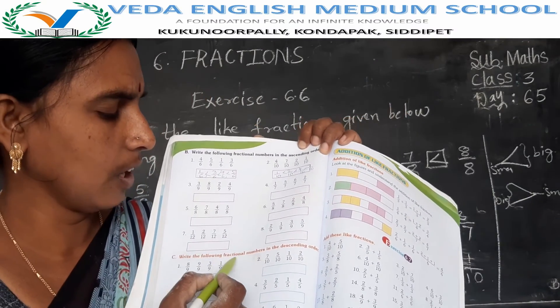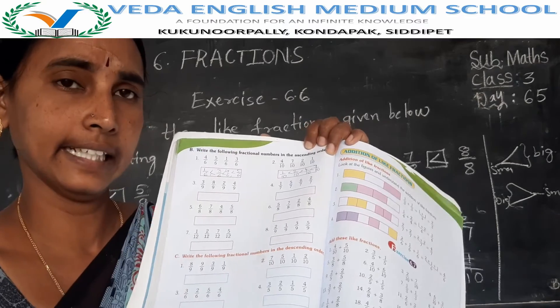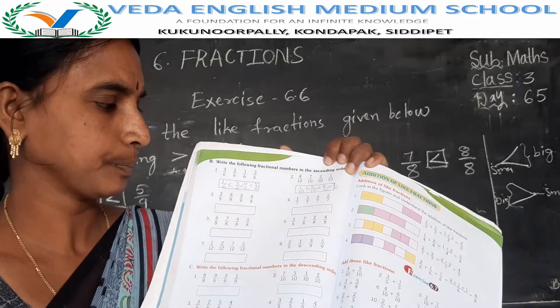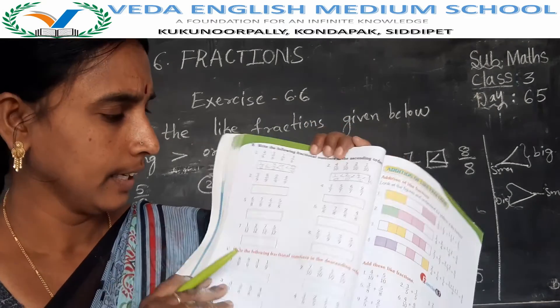Next — write the following fraction numbers in descending order. These are your homework.